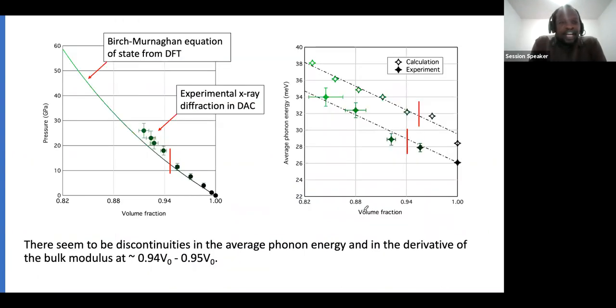Pointing out our results of pressure as a function of volume, when we fit our data in the Birch-Murnaghan equation, we observe that these experimental and functional results seem to have some discontinuity at regions near 0.94.